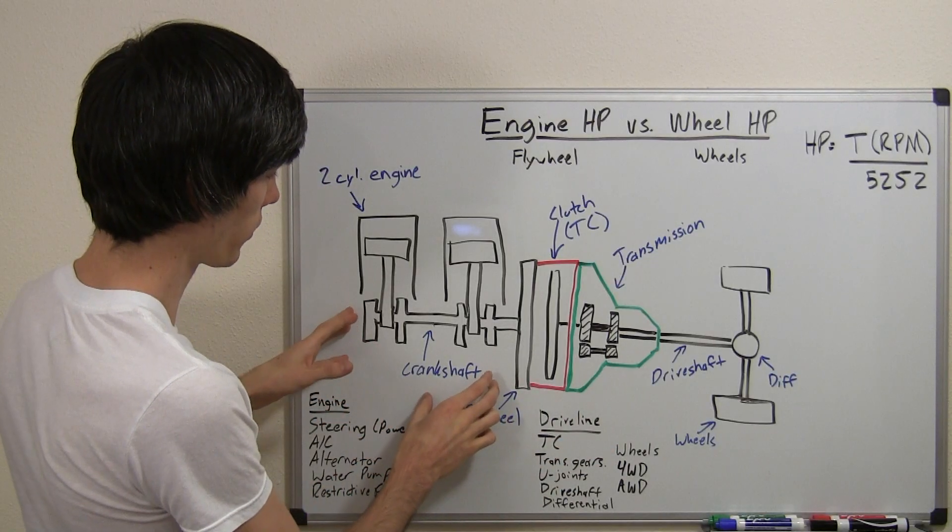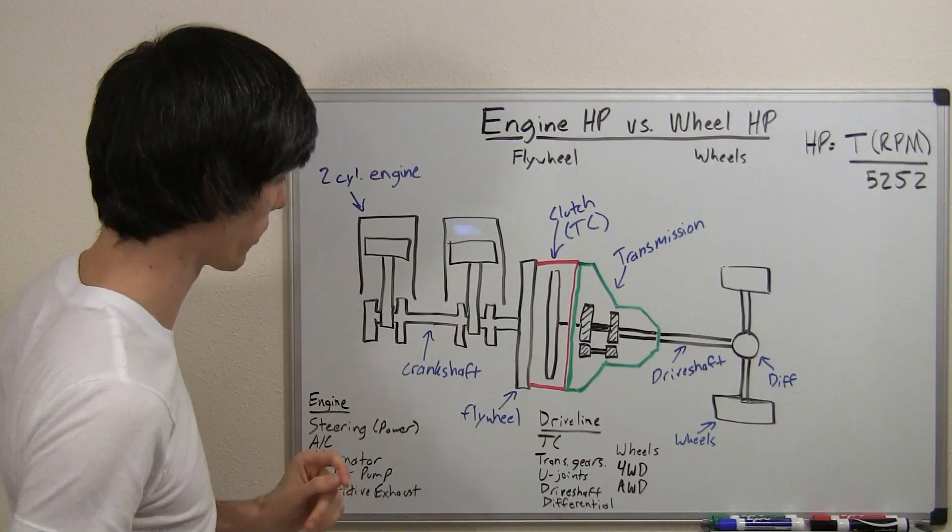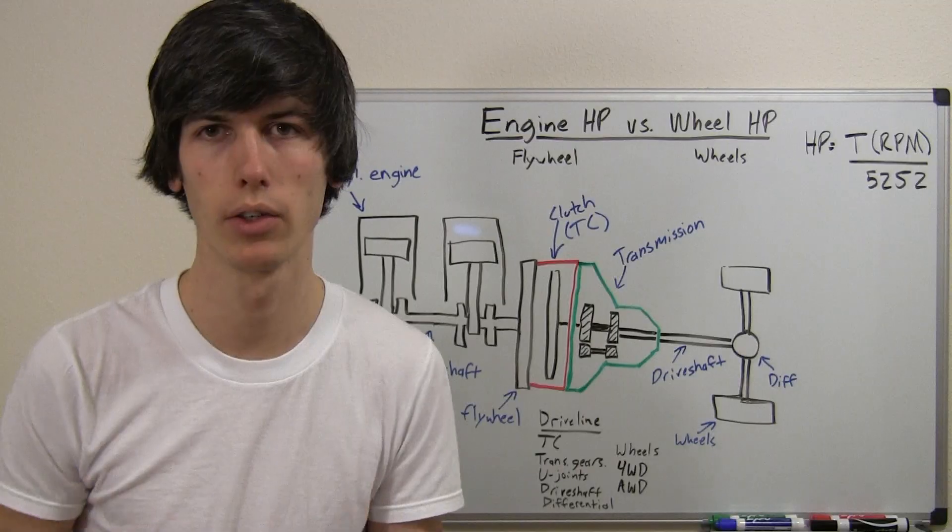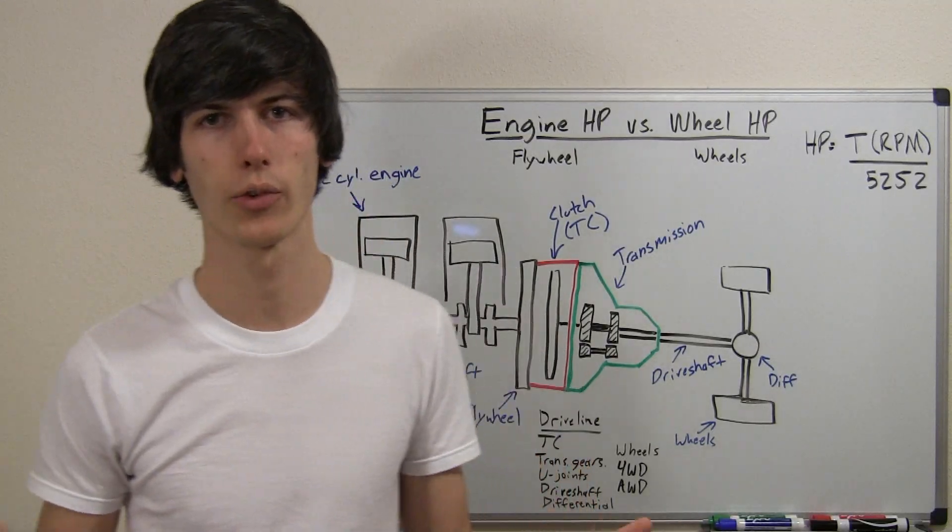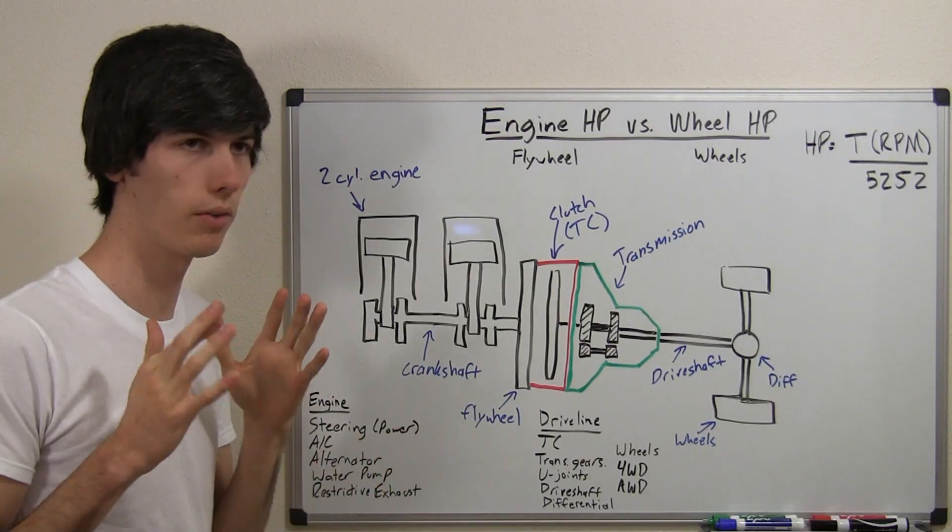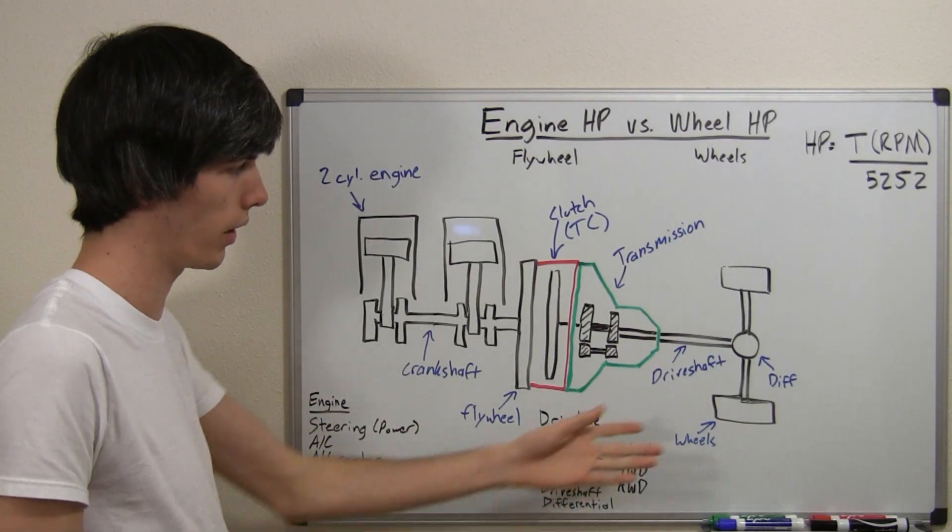Now, one of the things that is excluded, well there's several things that are excluded when you measure engine horsepower. When manufacturers say we're going to give you this new car and it has 200 horsepower, they're giving you the engine horsepower. The reason they're giving you the engine horsepower is because it's always higher than the wheel horsepower.